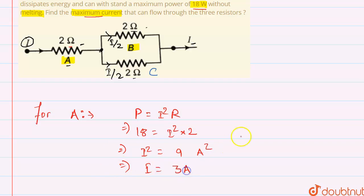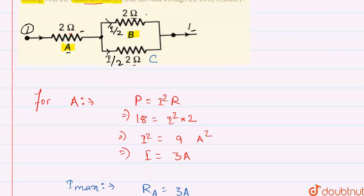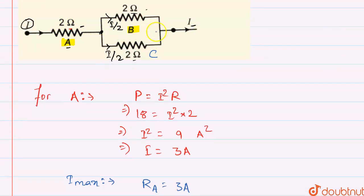So the current flowing through A is I, and through B and C is I by 2. Current max through resistor A is 3 ampere, as the current was I here.